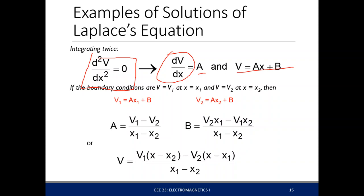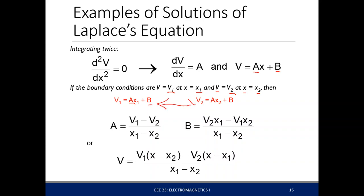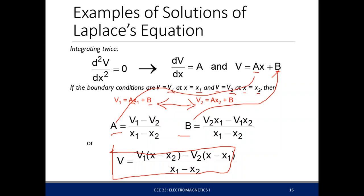At this point you need boundary conditions to get the expressions for a and b, since these are arbitrary constants. If we let V equal V1 at x equal to x1, and V equal V2 at x equal to x2, then we can solve for a and b simultaneously — two equations and two unknowns. Substituting back gives the expression for the voltage.